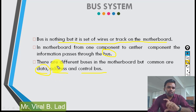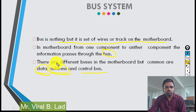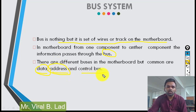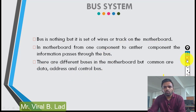The address bus is used when communicating with one component to another using addresses. The control bus carries control signals between components.